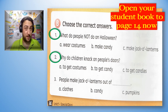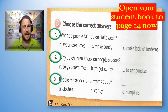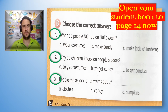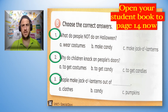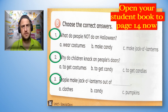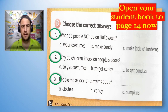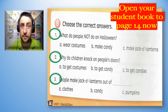Number three: People make jack-o'-lanterns out of — A: Cloves, B: Candy, or C: Pumpkins. People make jack-o'-lanterns out of A, B or C. Circle with your pencil.